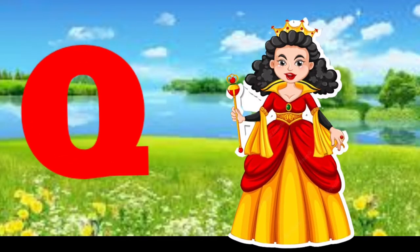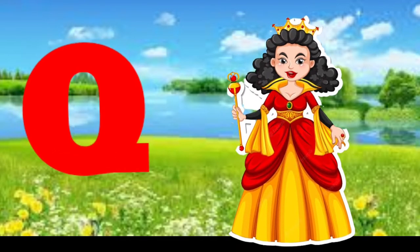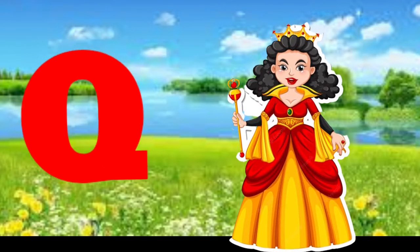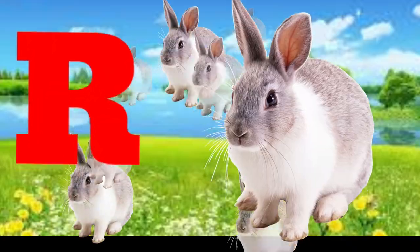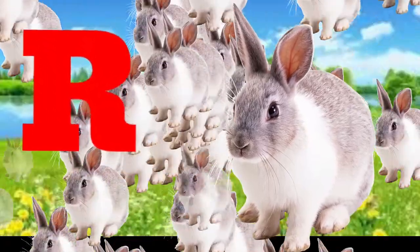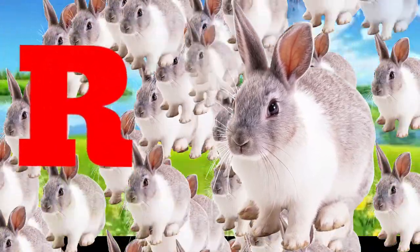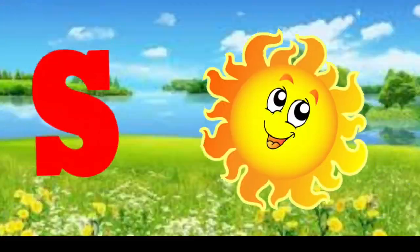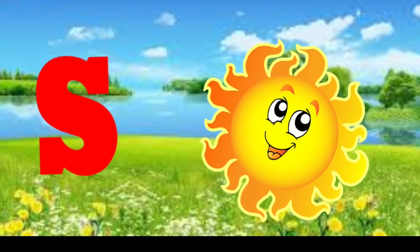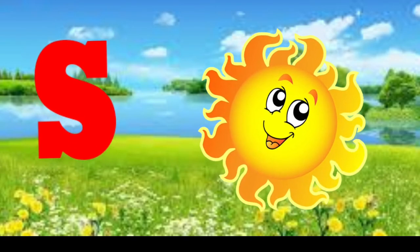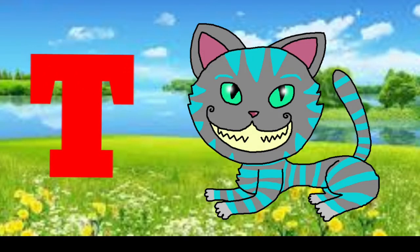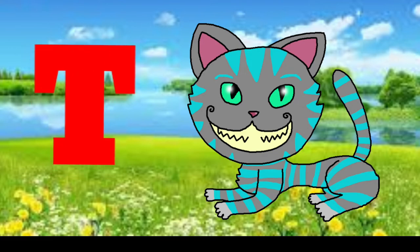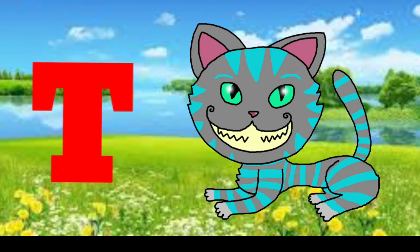Q is for queen, q-q-queen. R is for rabbit, r-r-rabbit. S is for sun, s-s-sun. T is for toad, t-t-toad.